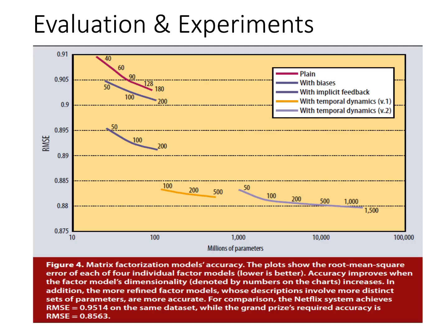In the evaluation and experiments, a graph shows root mean square error on the y-axis and million parameter size on the x-axis. Different colored lines represent individual models. A lower RMSE value represents more accurate results. The target for this competition was 0.85, and the temporal dynamics version 2 of the model comes close, reaching near 0.87.